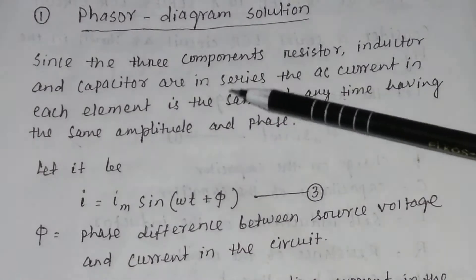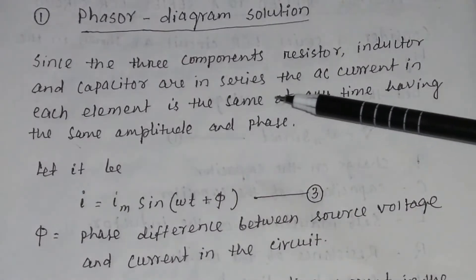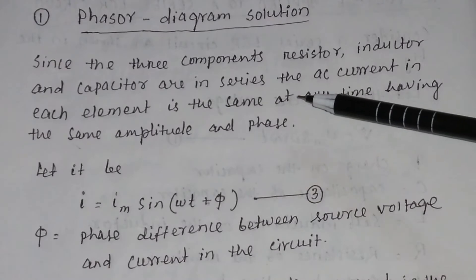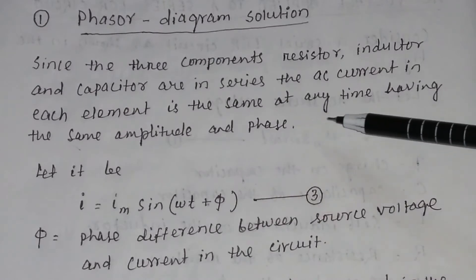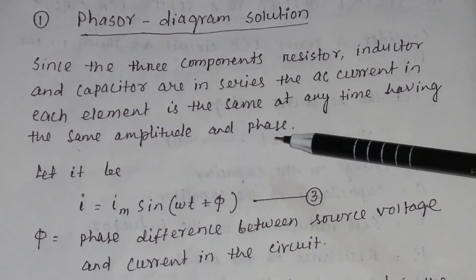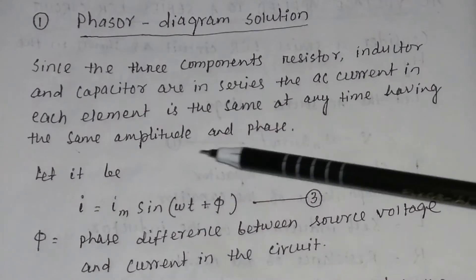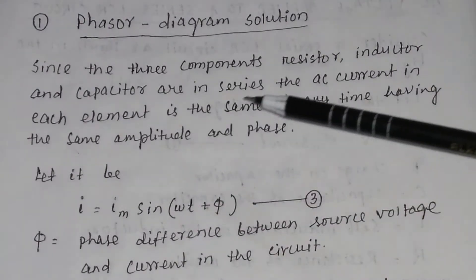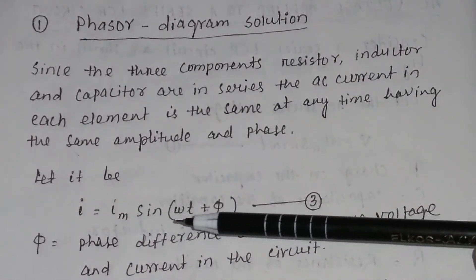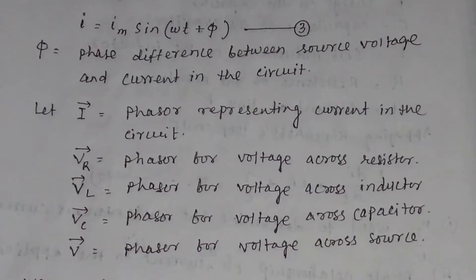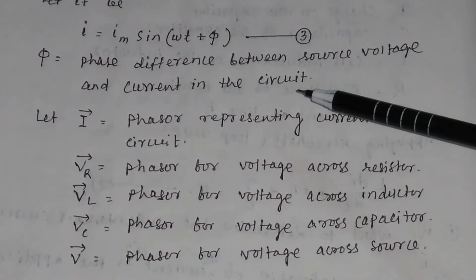Here we will discuss how to determine the instantaneous current and the phase by the technique of phasors, popularly known as the phasor diagram solution. Since the three components — resistor, inductor, and capacitor — are in series, the AC current in each element is the same at any time, having the same amplitude and phase. Let the instantaneous current be I = Im·sin(ωt + φ), where φ is the phase difference between the source voltage and the current.